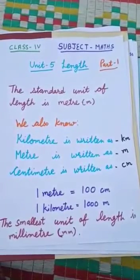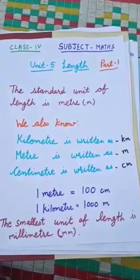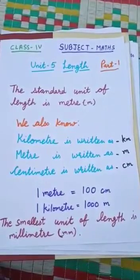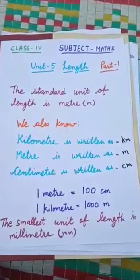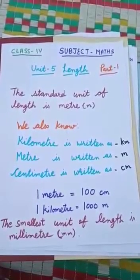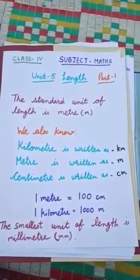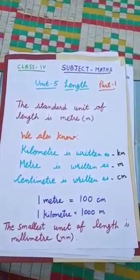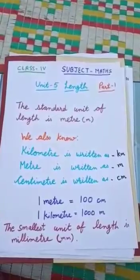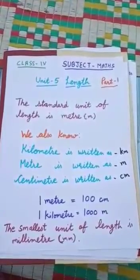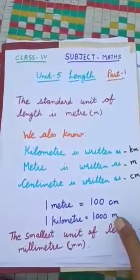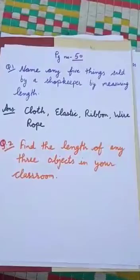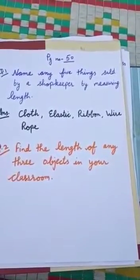Kilometer is written as km, meter is written as m, centimeter is written as cm. 1 meter is equal to 100 centimeters and 1 kilometer is equal to 1000 meters. The smallest unit of length is millimeter.